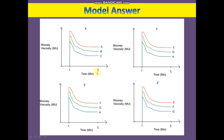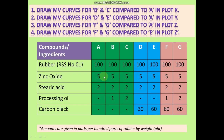In the plot, compound A, which contains no oil, shows the highest Mooney viscosity. Compound B contains 1 phr of processing oil, so its viscosity is lower than compound A. Compound C contains 2 phr of processing oil and therefore shows the lowest Mooney viscosity value. This effect is also seen for the initial torque portion of the Mooney viscosity curves — the same pattern applies.